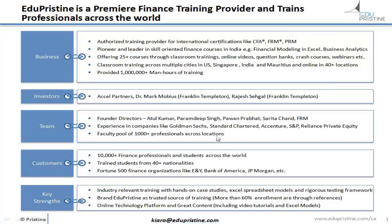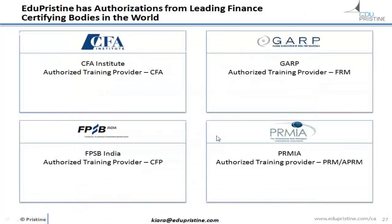One important thing is the authorizations. There are some training programs you can't provide without authorization. The authorizations EduPristine holds are specifically of interest to business analytics, a lot in the financial area. Having that certification means that any certificate you receive from EduPristine is recognized around the world, because it comes with the endorsement of important organizations — covering areas like financial modeling and many other different things.